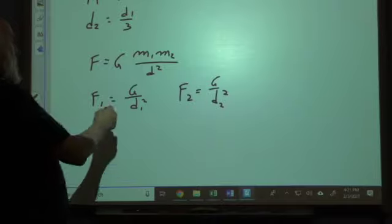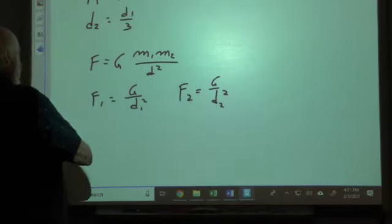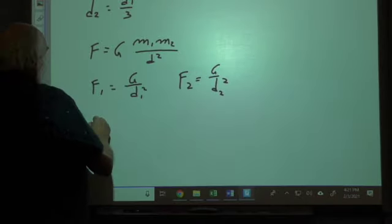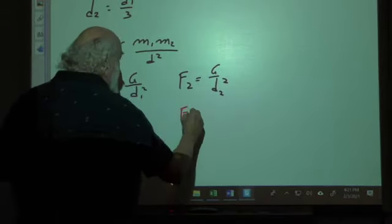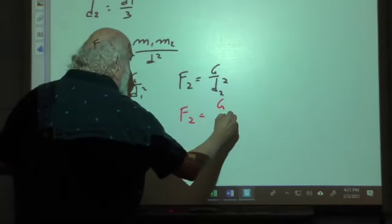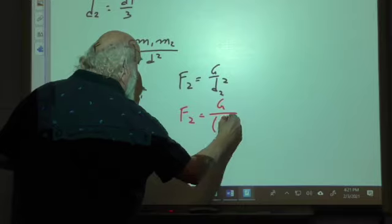Now what I'm going to do is I'm going to plug this in right here. So that means that F2, let me put this up here, F2 becomes G over d1 over 3 squared.